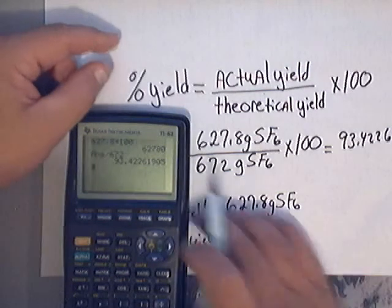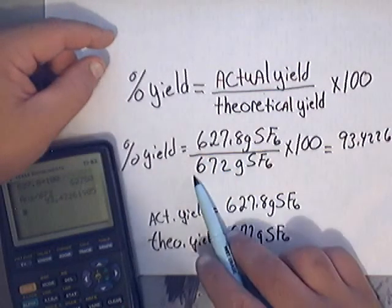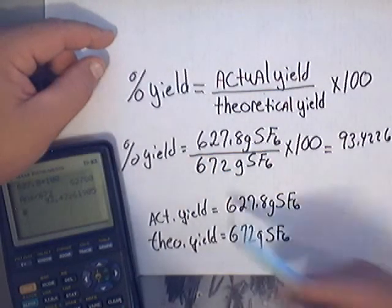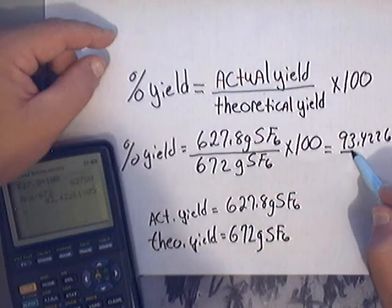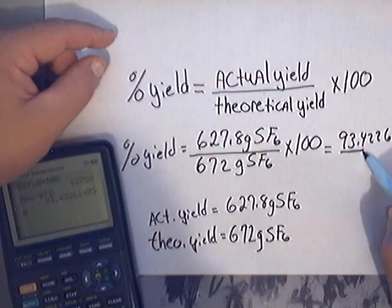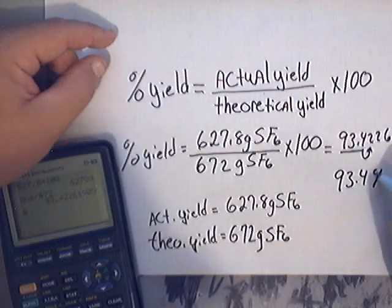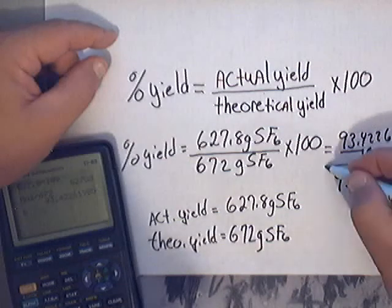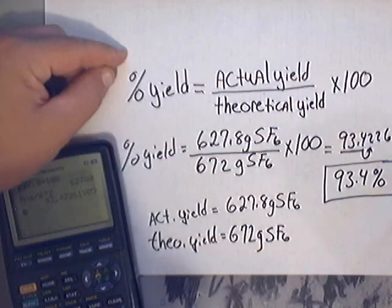Now if you look at sig fig rules, there are four sig figs here and three here. The smallest amount is three, so you would keep 93.4 — that number can't round. So your percent yield is 93.4%, and that is how you calculate percent yield.